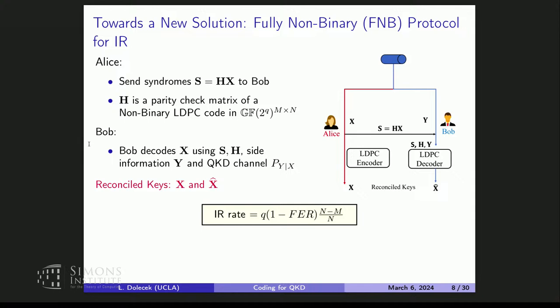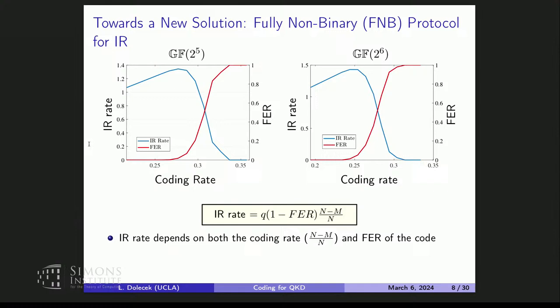The information reconciliation rate depends on the coding rate and the FER of the code. Interestingly, it's not a monotonic function in the FER—a better code does not always dominate because of balancing that must be performed. The information reconciliation rate curves in blue have a big peak at a certain point—a non-monotonic dependence. When FER is not strictly zero, we have to abort the frame and cannot proceed. The maximum occurs at relatively high values of FER, which is not something we see in other domains like storage, and opens up different code design questions.